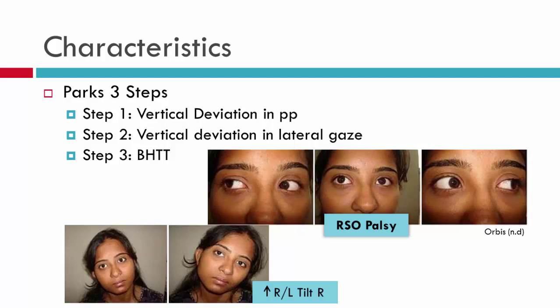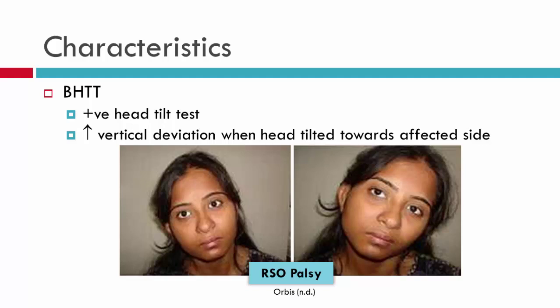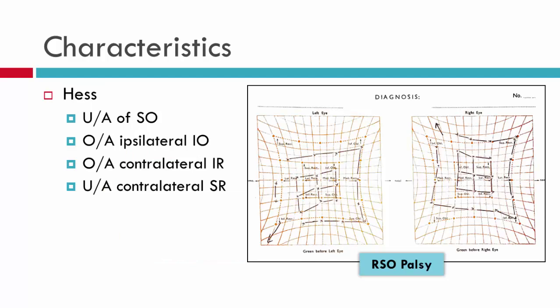In terms of Park's three steps, we see the hypertropia in primary position and an increase in one of the lateral gaze positions — for the right superior oblique, that will be in left gaze. As expected on Bielschowsky head tilt test, the height will increase when the patient tilts to the affected side. Here we can see an increase in height on right tilt compared to left tilt, indicating that on right tilt the right eye is incycloducting. As the right eye incycloducts, the superior rectus remains unopposed, causing an increase in height as the superior oblique of the right eye is palsied.